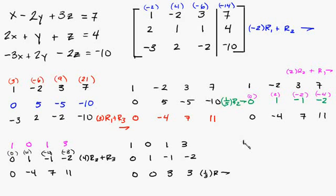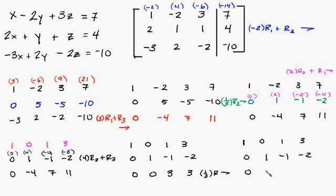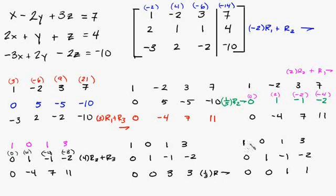Copy everything over: 1, 0, 1, 3. 0, 1, negative 1, negative 2. 0 times 1/3 is 0 — same thing. 3 times 1/3 is 1. 3 times 1/3 is 1. We've got the 1s. Now what we've got to do is get these to become 0s. So we can multiply row 3 times negative 1 and add it to row 1.